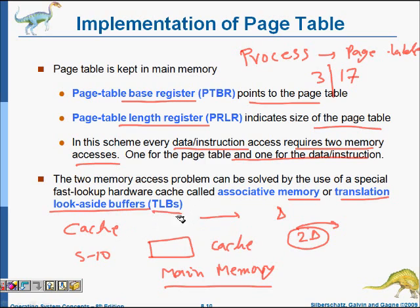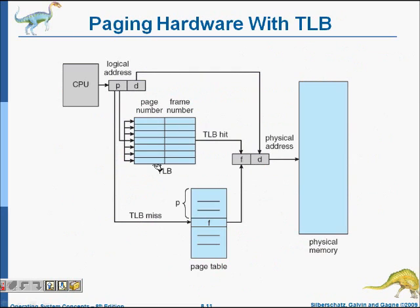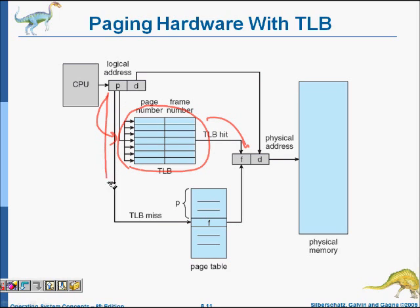Accessing the TLB takes much less time. When the CPU needs to access a page, it first checks the TLB. If found, that is a hit — we get the frame number and access memory quickly. If not found, that is a miss — we go to main memory to find the frame number in the full page table, then access memory. If the page is in the TLB it is much faster; if not, it becomes slower.